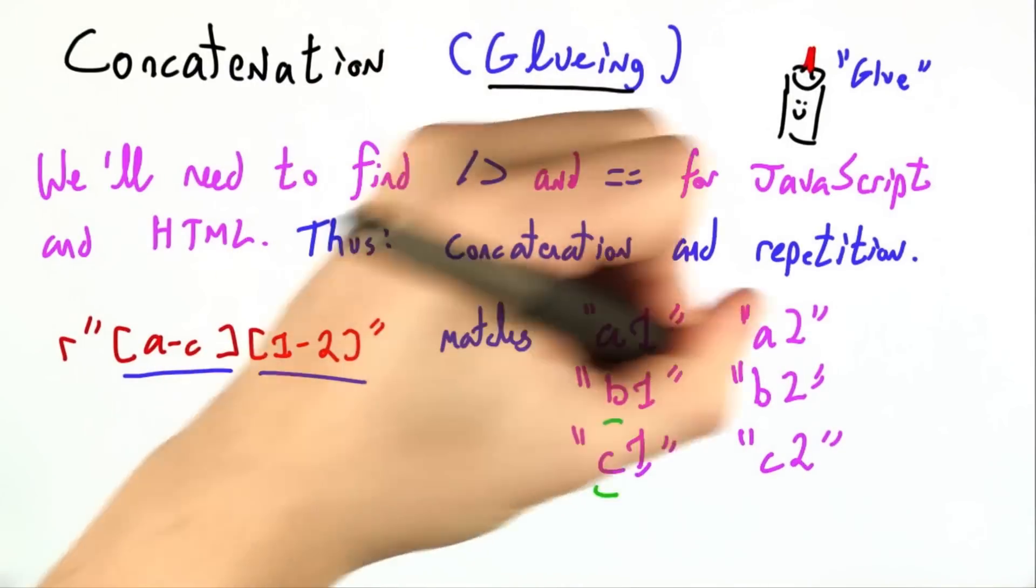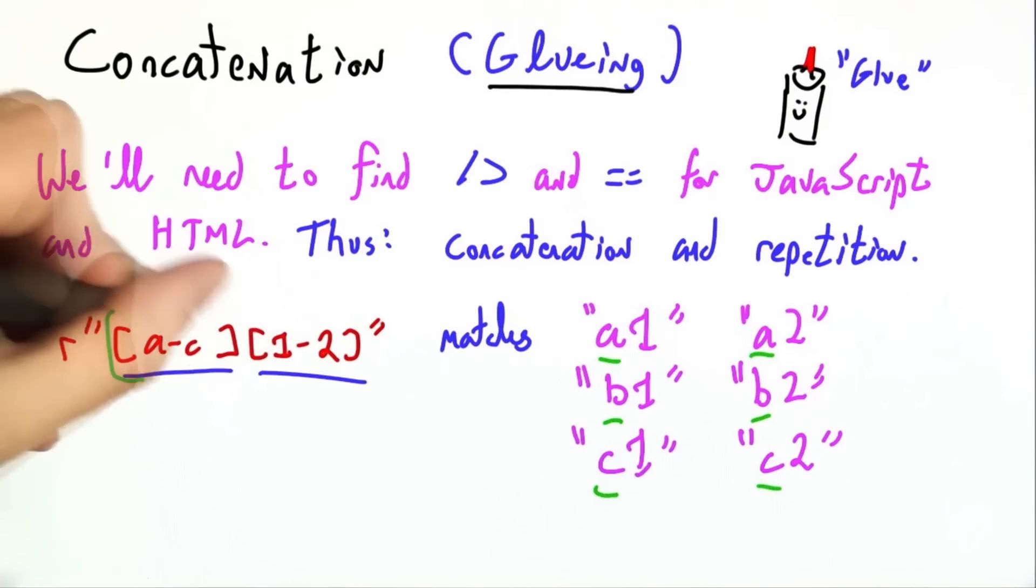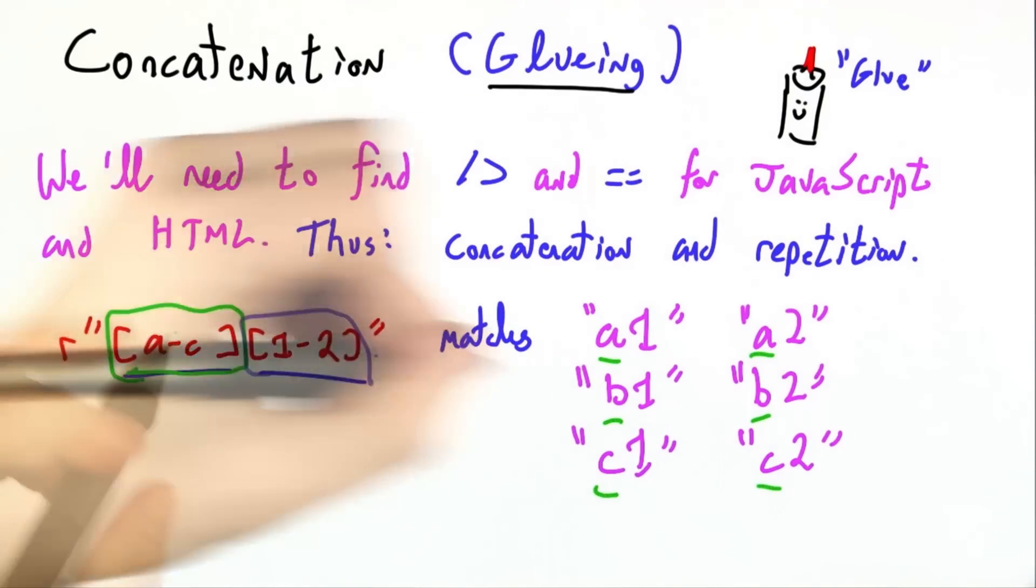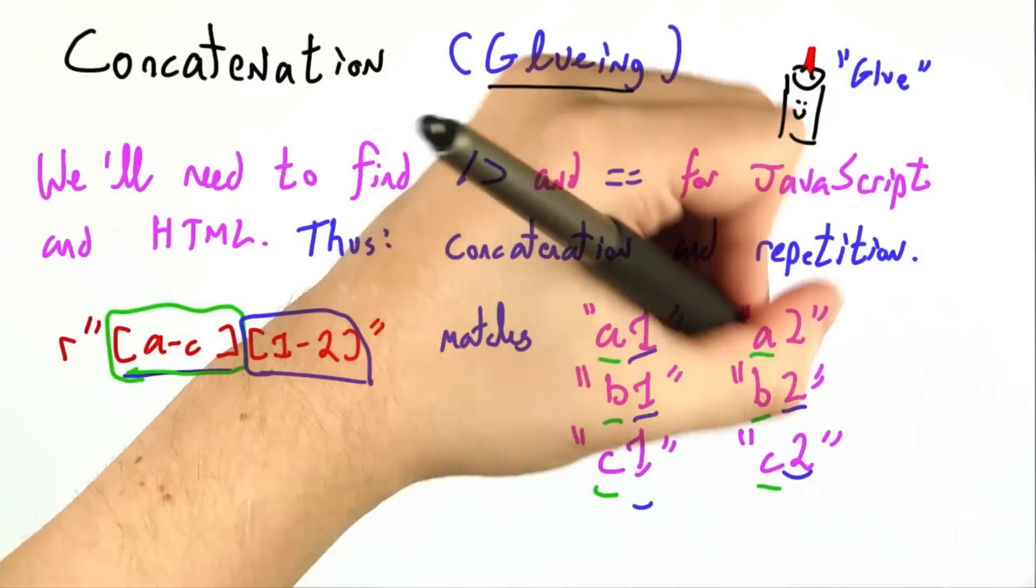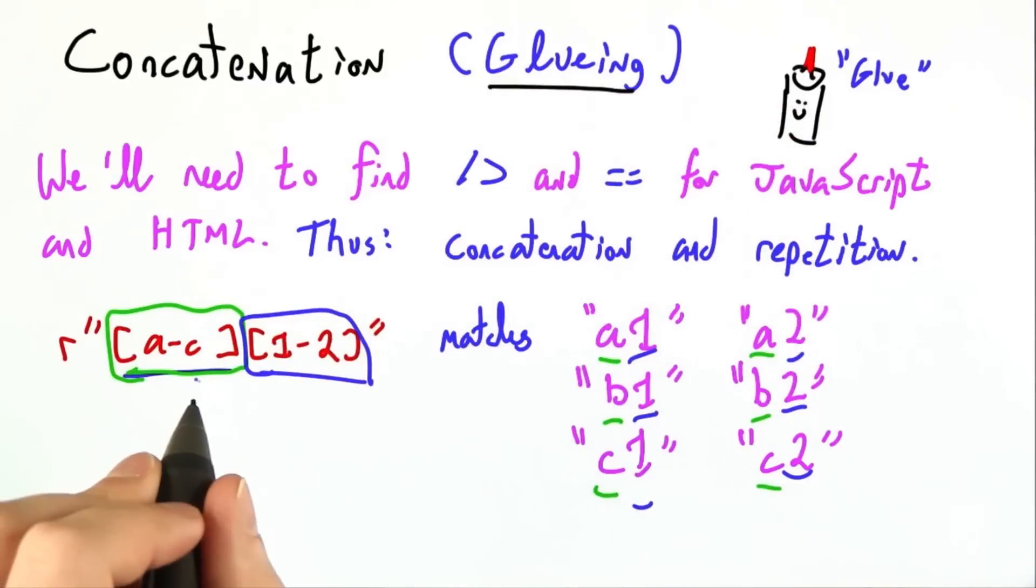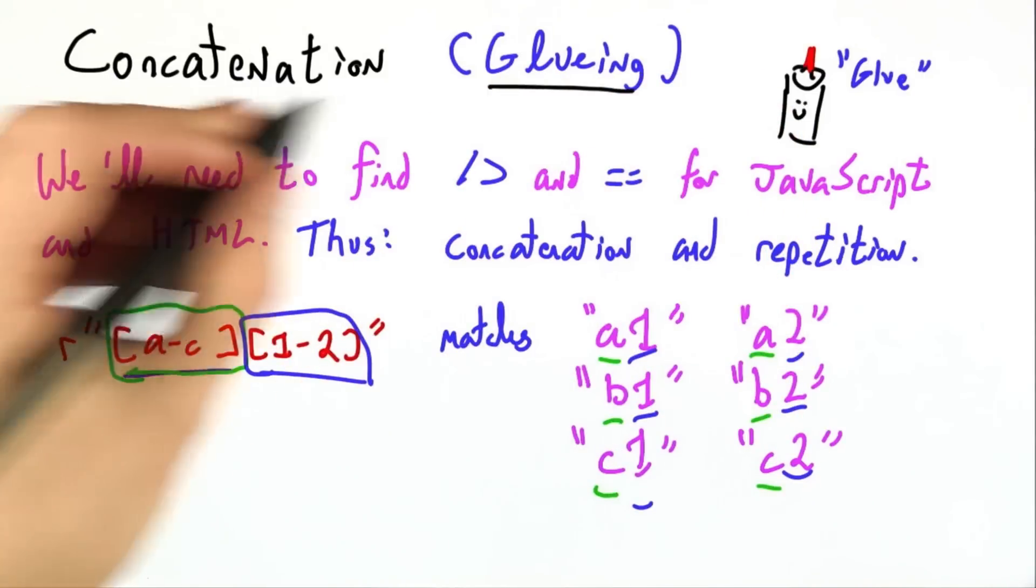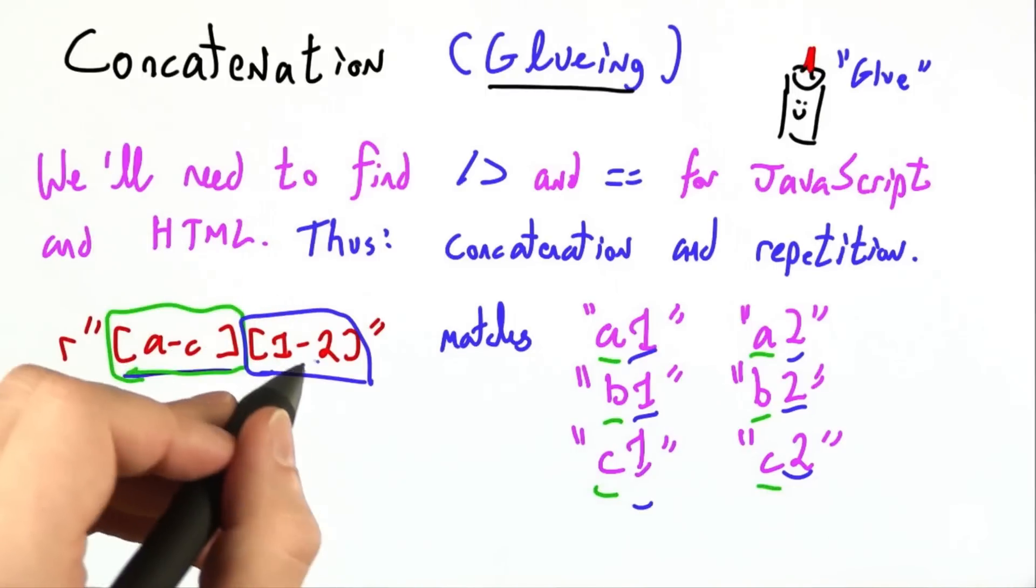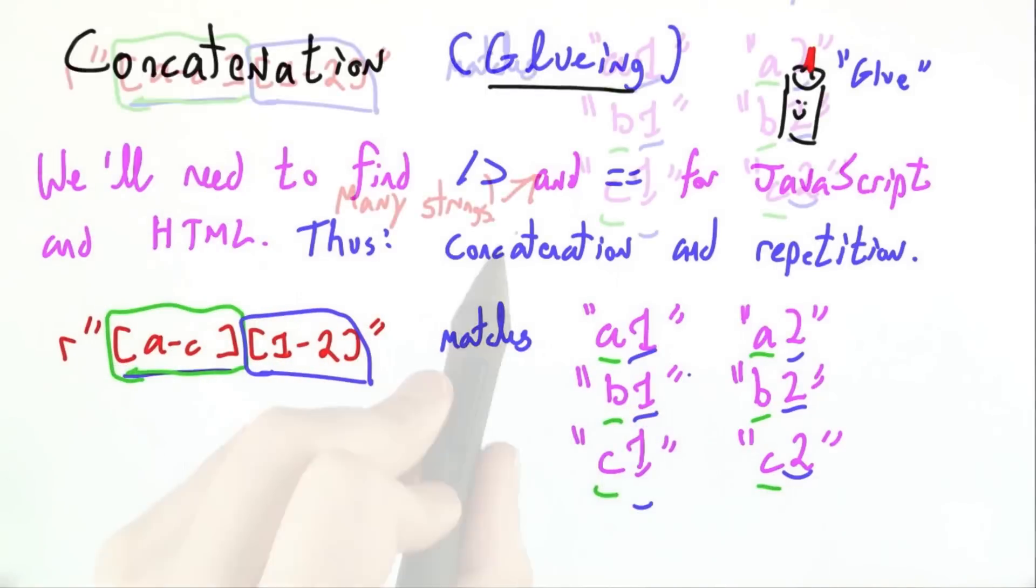In each one, the first letter comes from the first regular expression, and the second letter, 1 or 2, matches the second part of the regular expression. We've concatenated a through c and 1 through 2 together to match more complicated strings.